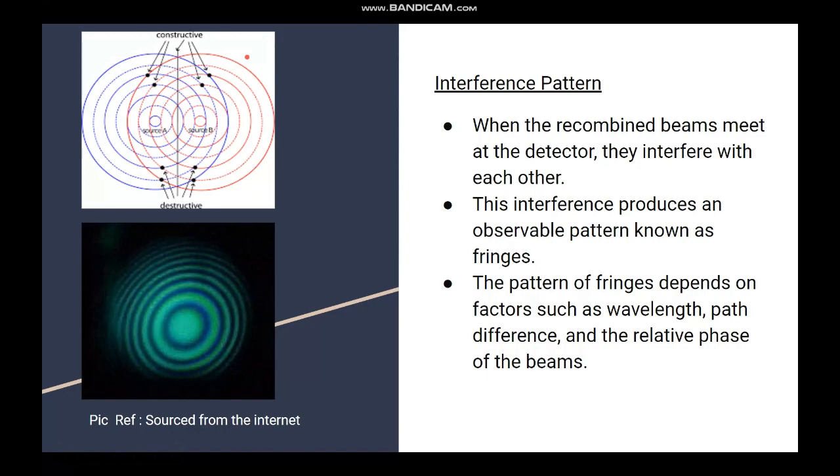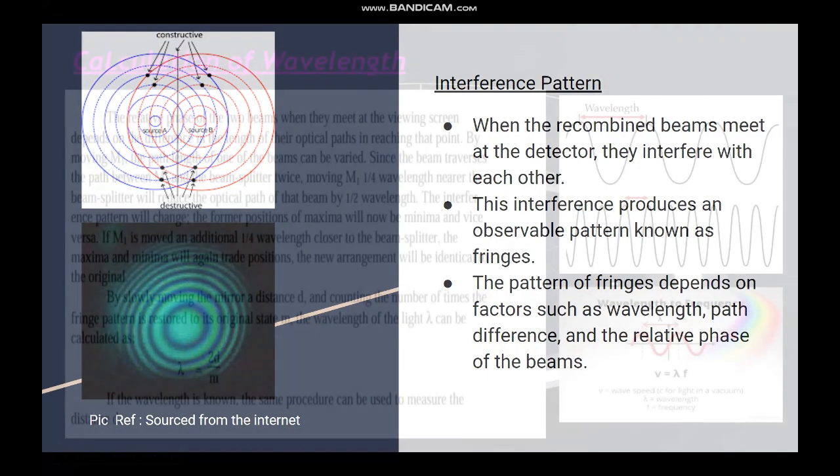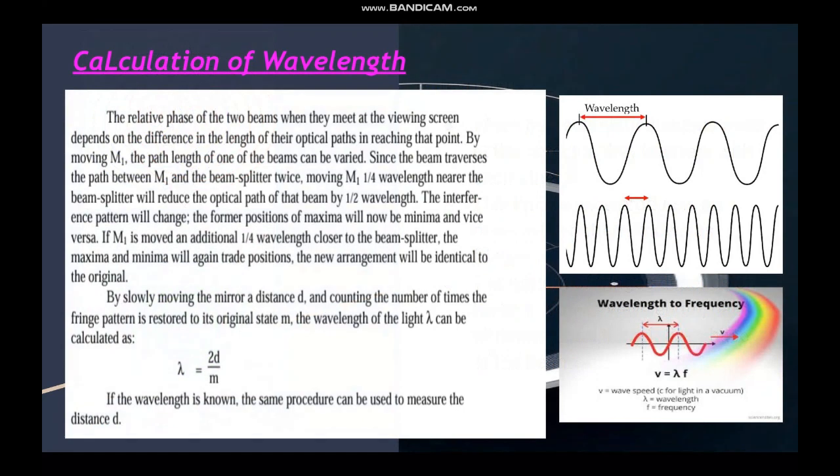Many things can be derived from these fringes. You can calculate the wavelength of light with certain modifications. One widespread application of the Michelson interferometer is determining wavelength. You slowly move the mirror a distance d and count the number of fringe patterns required to restore it to the original state. Then you apply the formula λ = 2d/m to determine the wavelength. This is a very simple but very effective procedure for calculating the wavelength of a monochromatic light source.